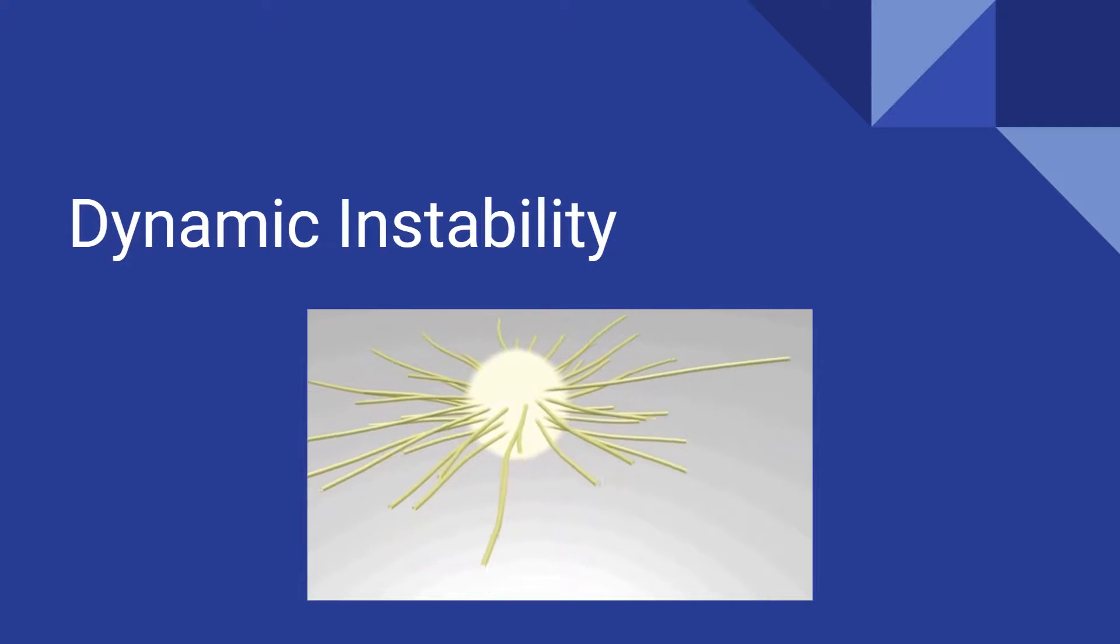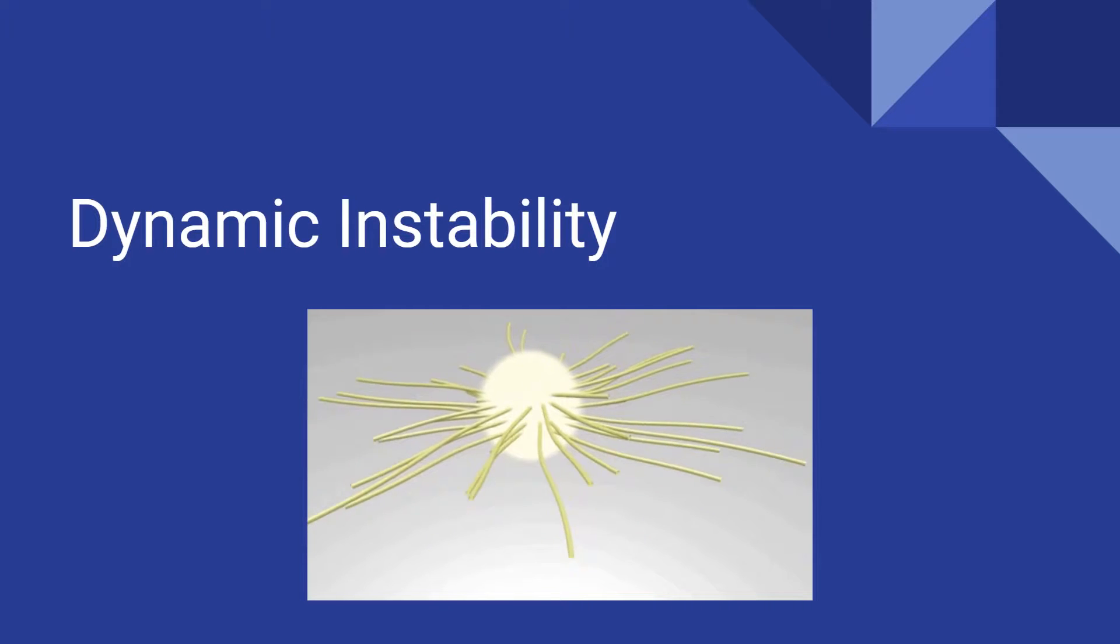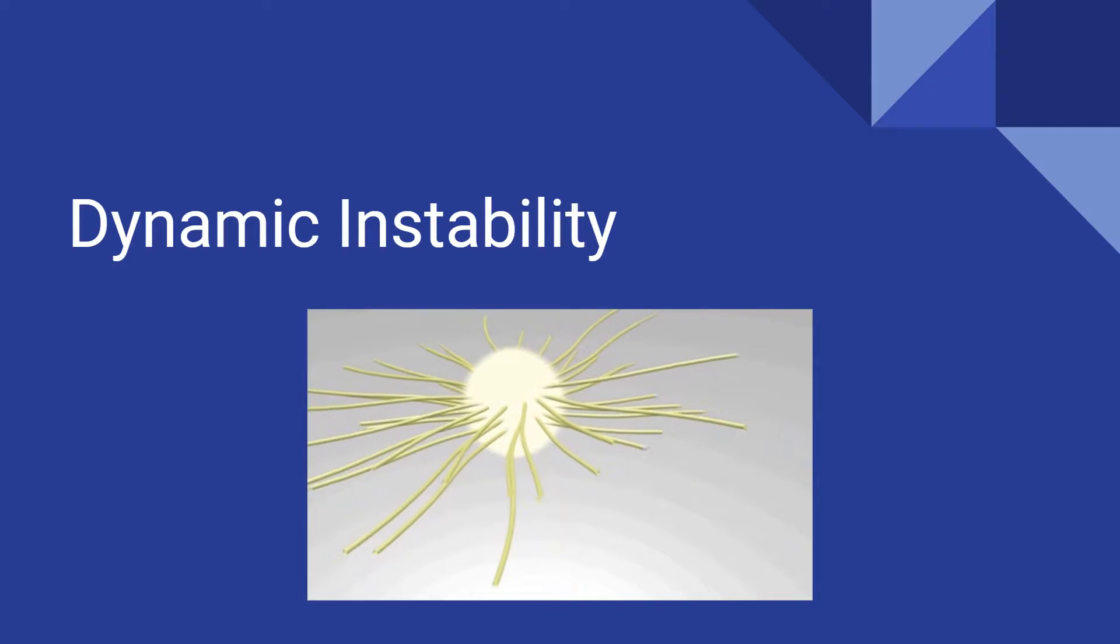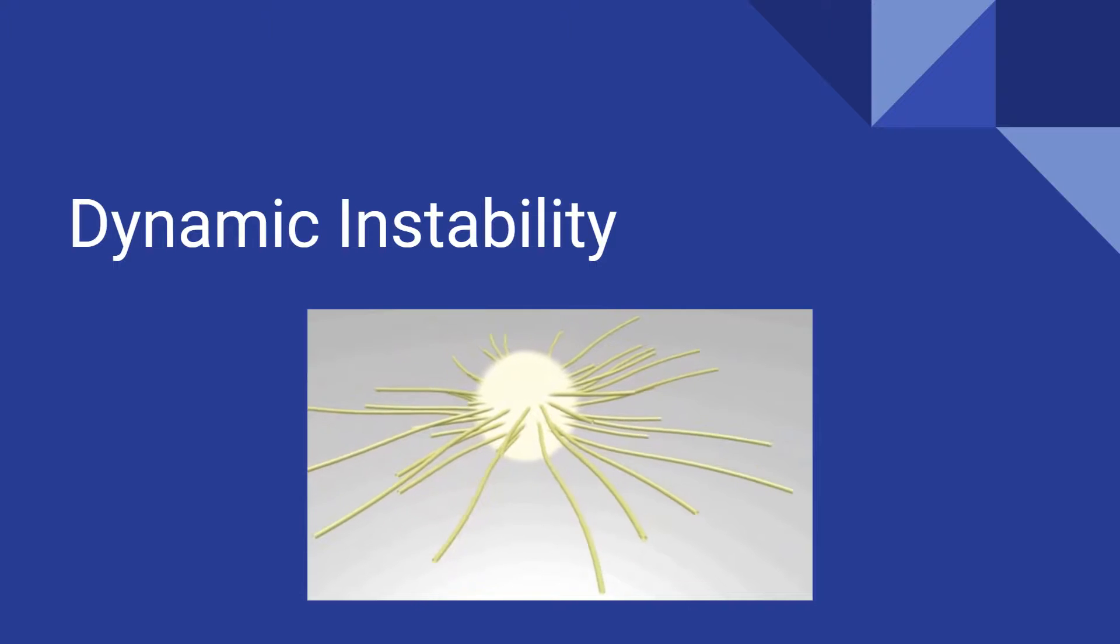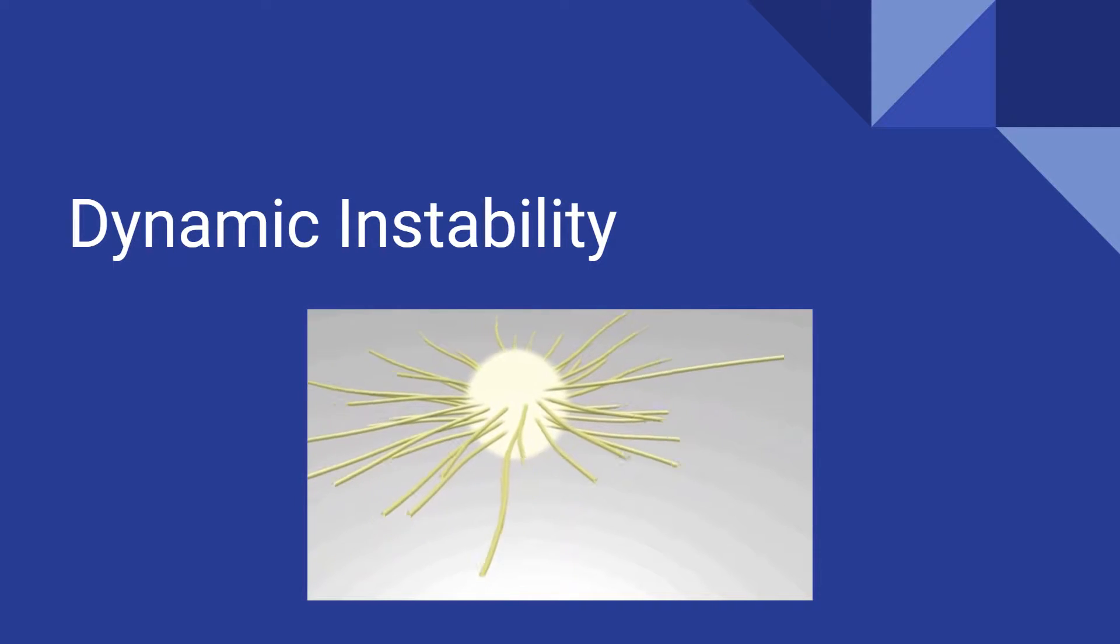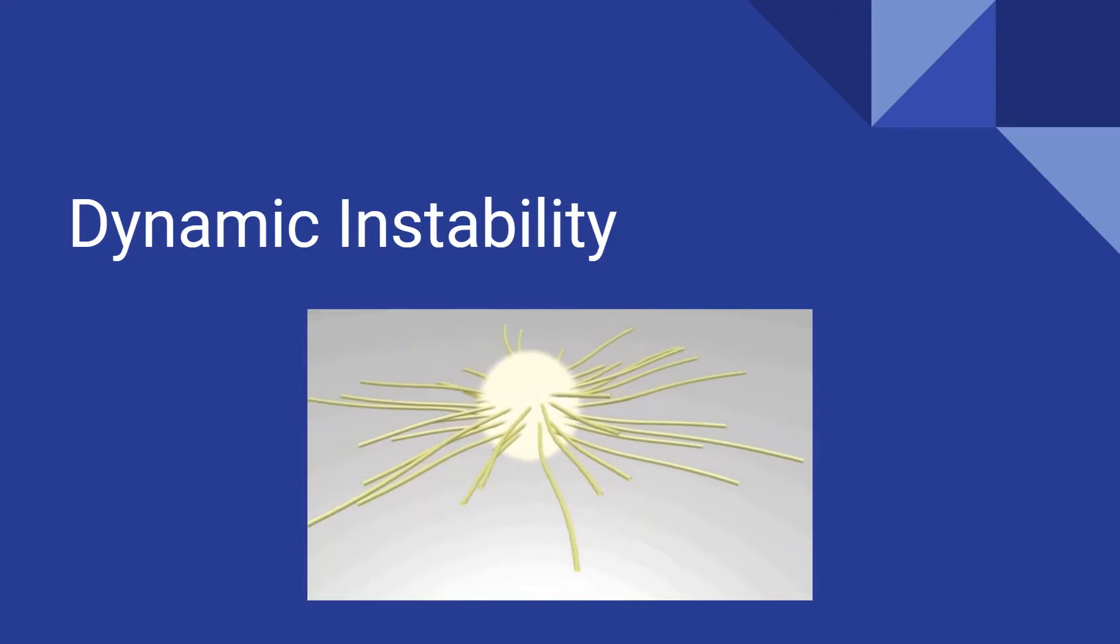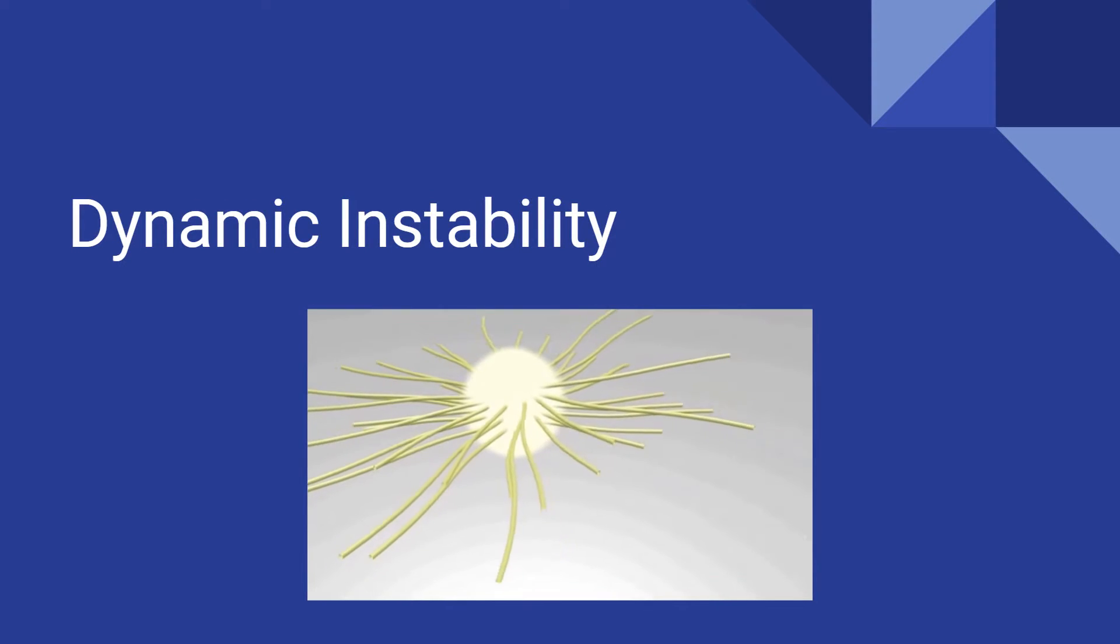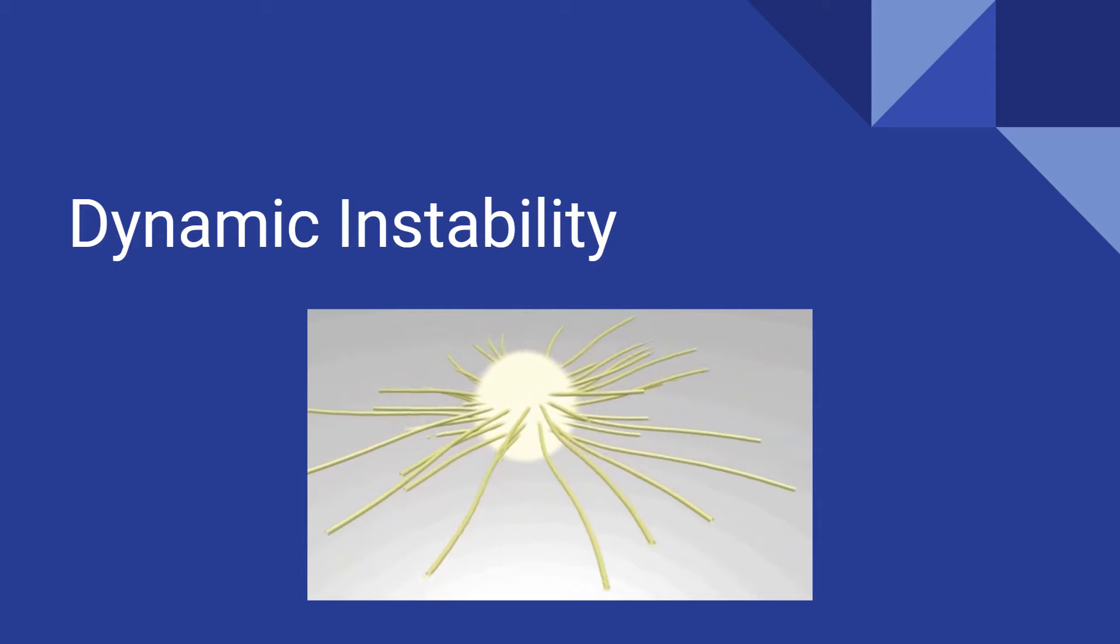In addition, microtubules have a property called dynamic instability, which allows them to assemble and disassemble rapidly and continuously. To get a microtubule to stay assembled and become a stable part of the cytoskeleton, it must come in contact with another cell structure.